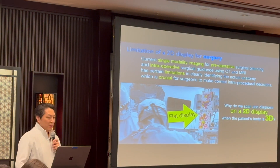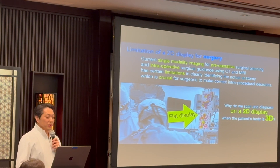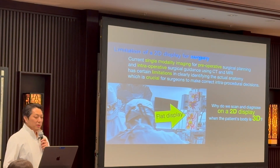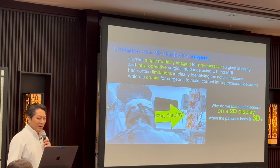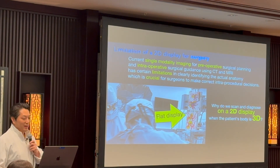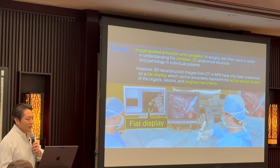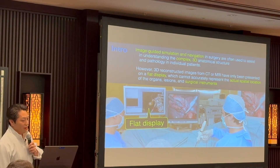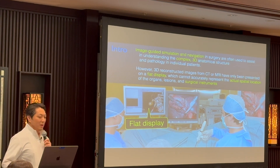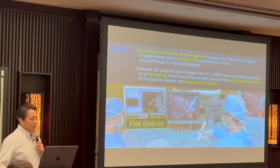Accurate anatomy identification is crucial for surgeons to make correct intra-procedural decisions. Why do we scan and diagnose on 2D displays even when the patient's body is 3D? Image-guided simulation and navigation in surgery are often used to assist in understanding the complex 3D anatomical structures and pathology in individual patients.